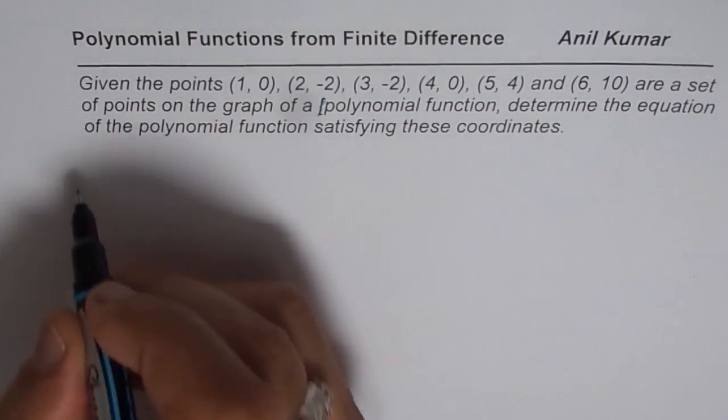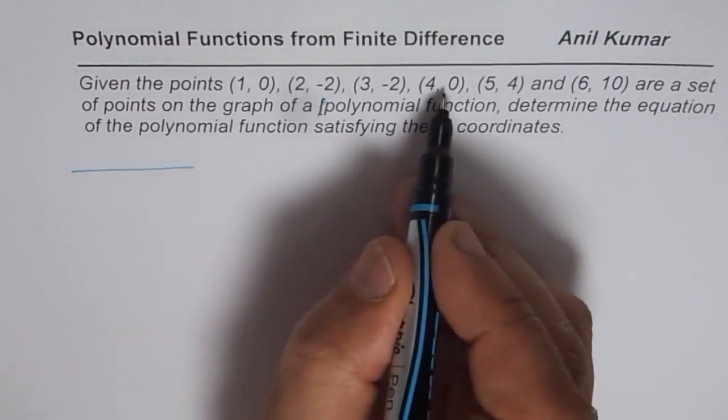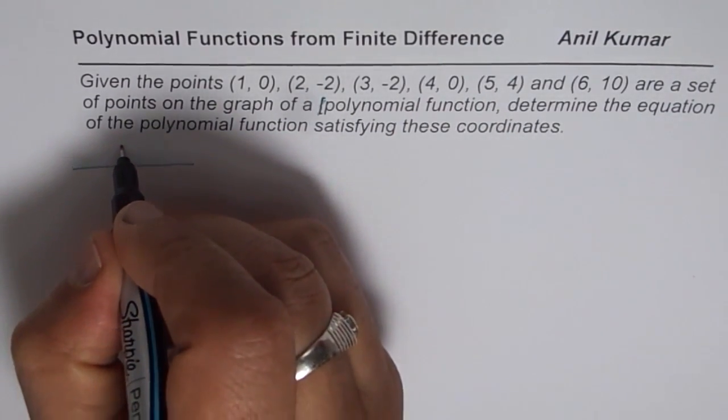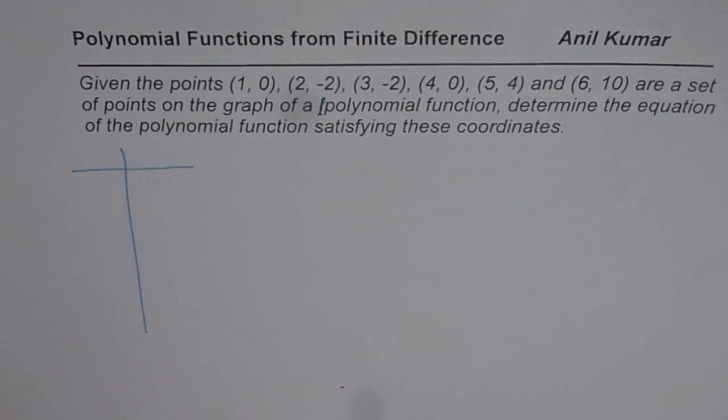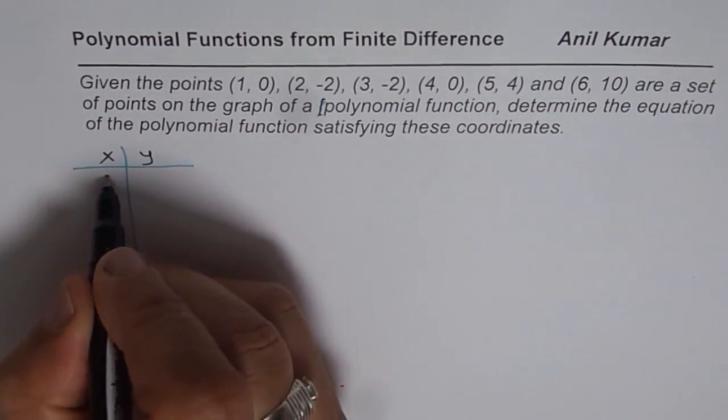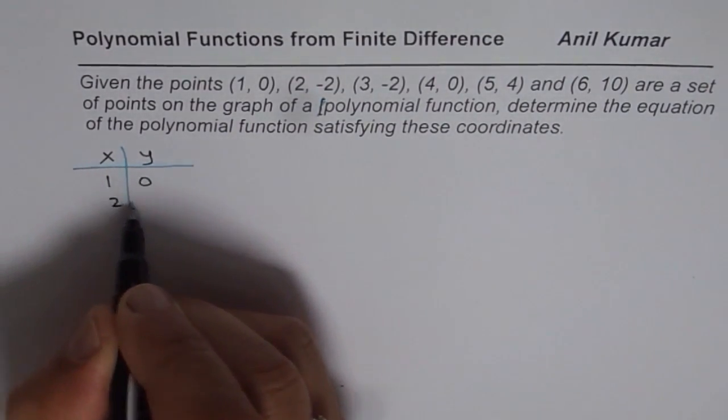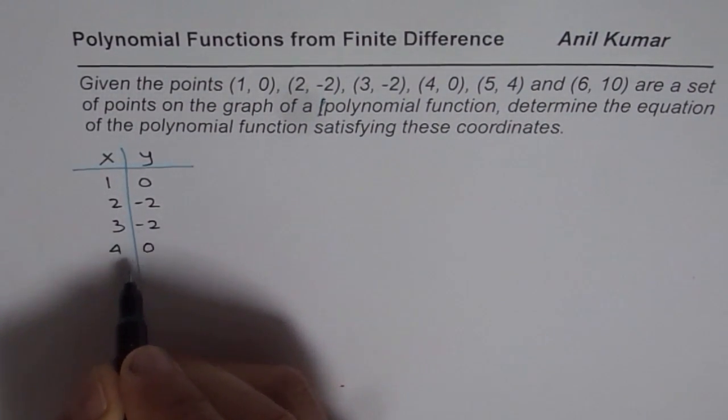Let's begin. So what we have here is a set of data, where we have 1, 2, 3, 4, 5, 6 points. So let's start with these 6 points. So the points are 1, 0. So I'll write x value here, y value on the other side. 1, 0, 2, -2, 3, -2, 4, 0, 5, 4.